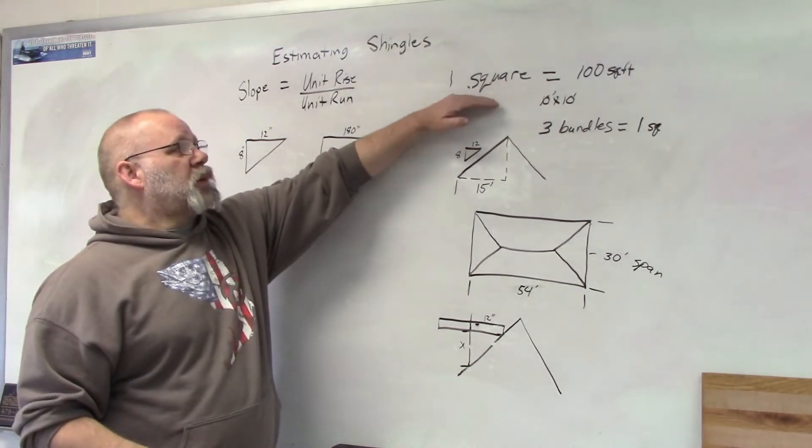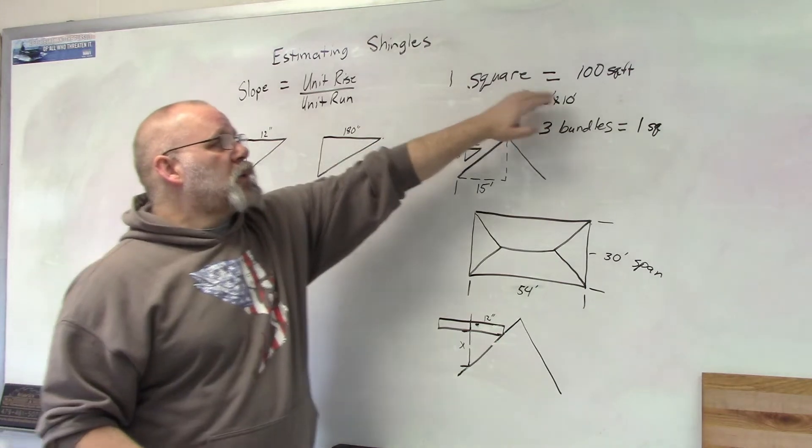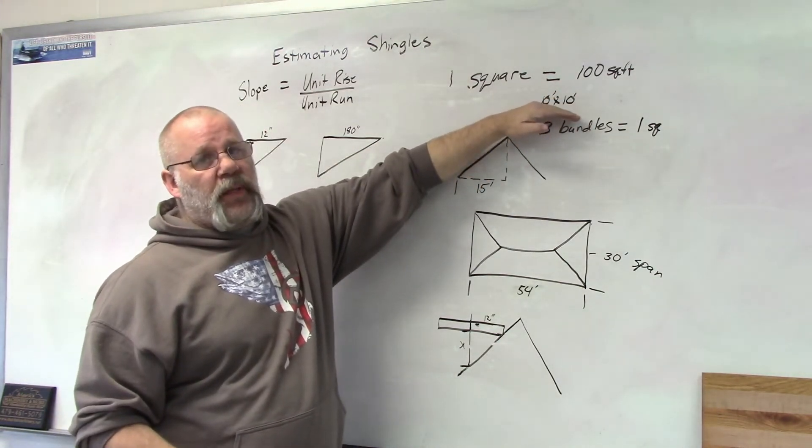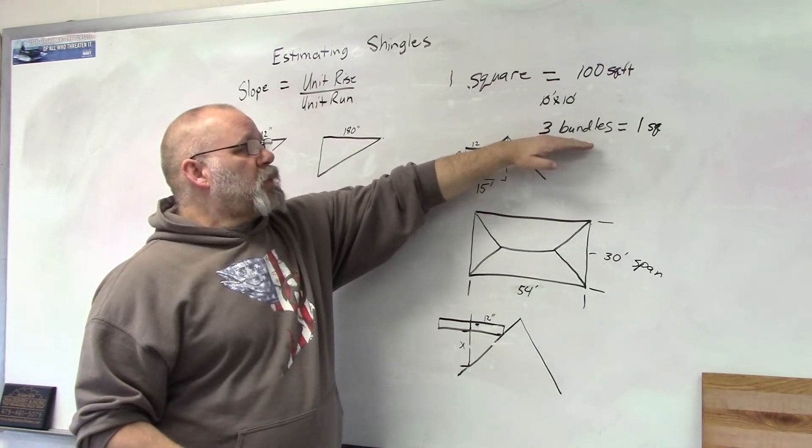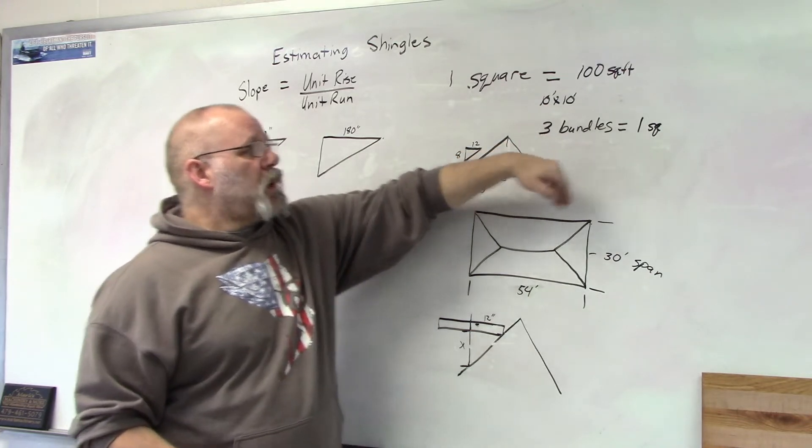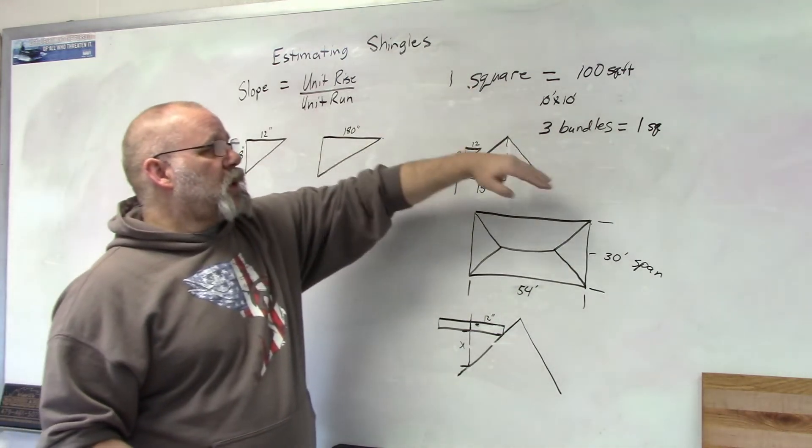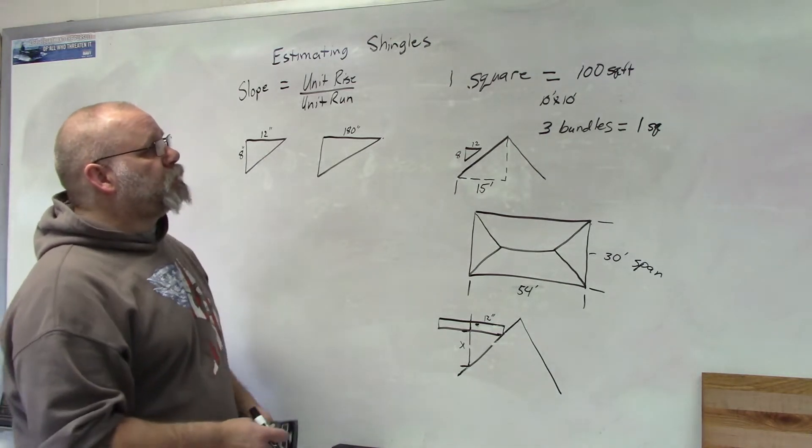The first thing we need to know is that we're going to buy shingles as squares. One square equals 100 square feet, that's an area of 10 feet by 10 feet. Normally three bundles equal one square, so if you don't need a whole square, you know how many bundles to buy.